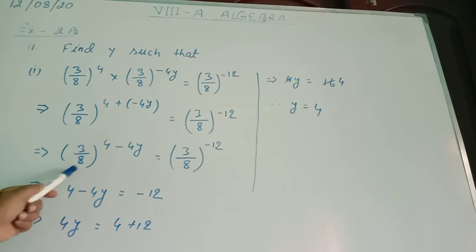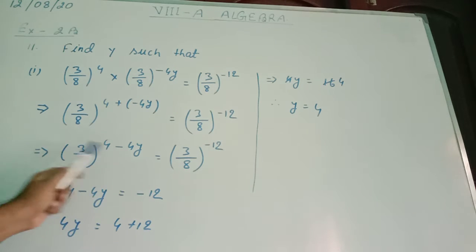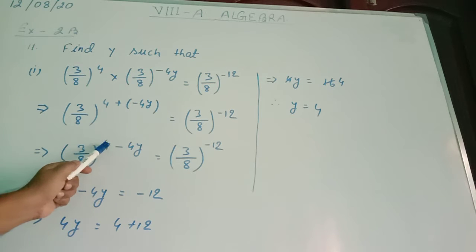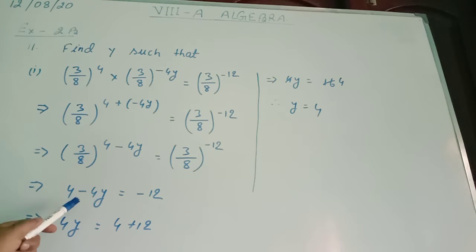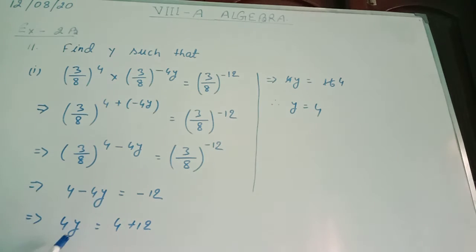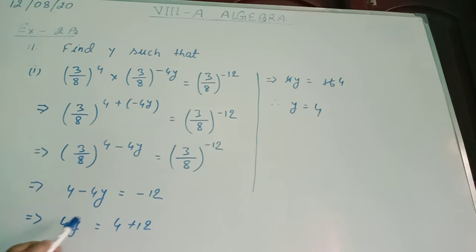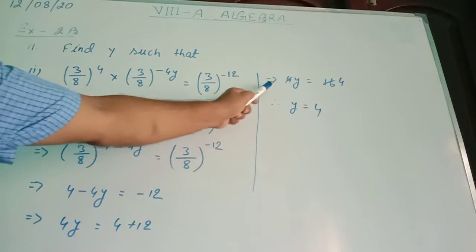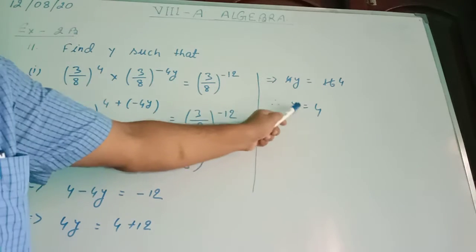Now in LHS and RHS the bases are same, so I have cancelled the bases. We have now 4 minus 4y equal to minus 12. Following the rule of transposition, minus 4y went to that side and became plus 4y, and minus 12 came to this side and became plus 12. So 4y = 4 + 12, which implies 4y = 16, therefore y = 4.